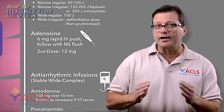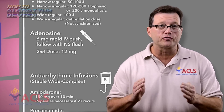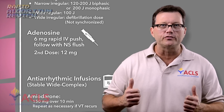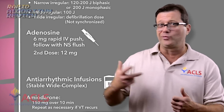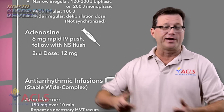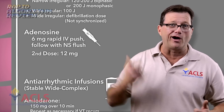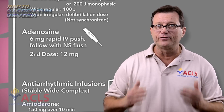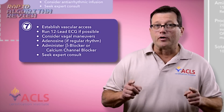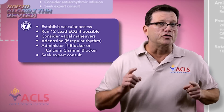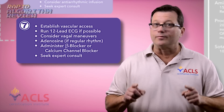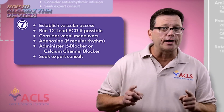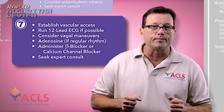For narrow complex tachycardias, first drug up: adenosine. Six milligrams, rapid IV push, followed by a 20cc syringe bolus of saline. We've got to get that drug to the heart quickly because the half-life of adenosine is only a few seconds. Remember, adenosine should only be used in regular rhythms, not any irregular tachycardias — but for regular tachycardias, adenosine would be appropriate.